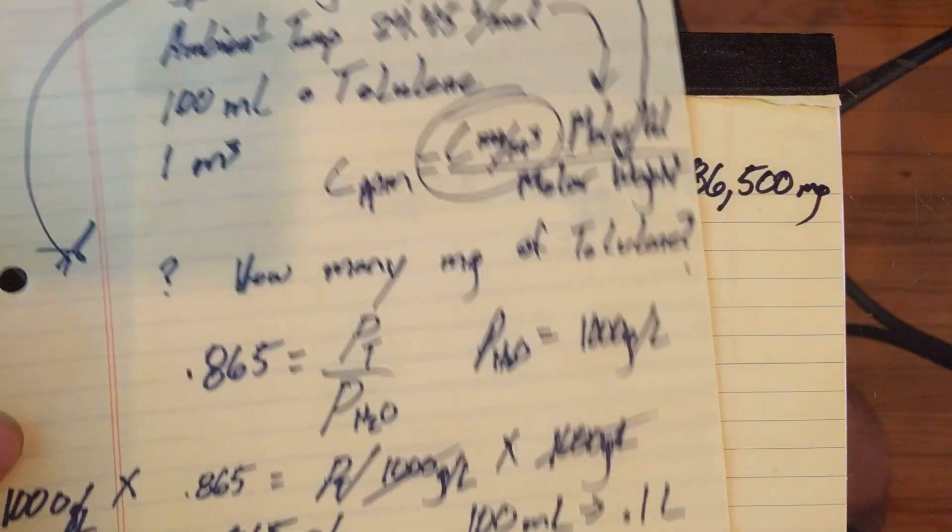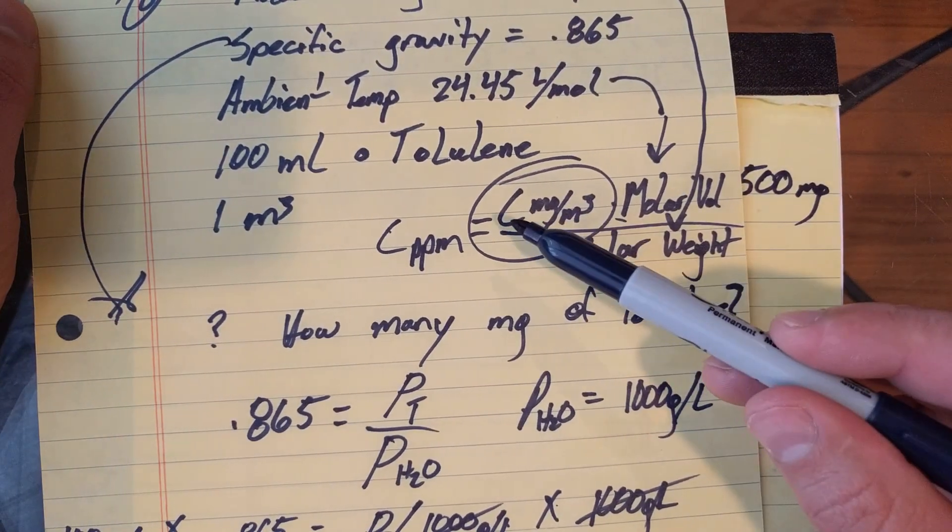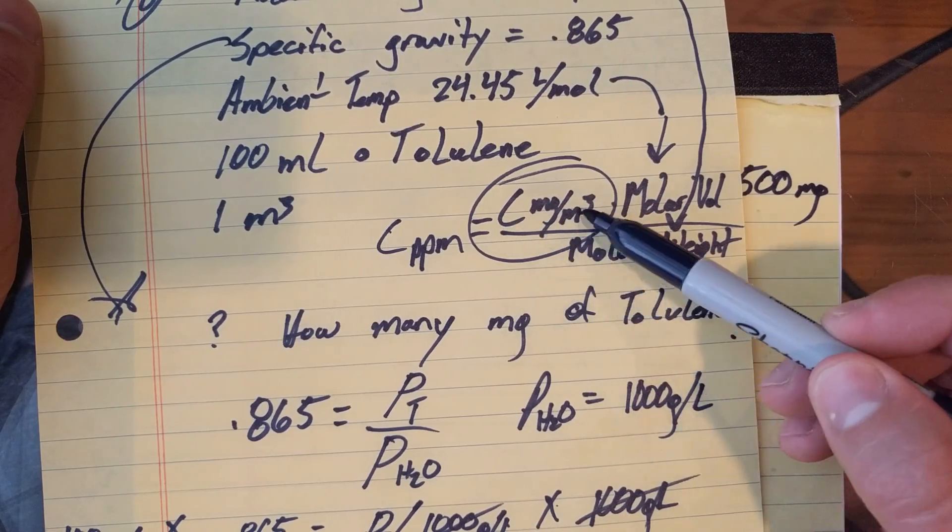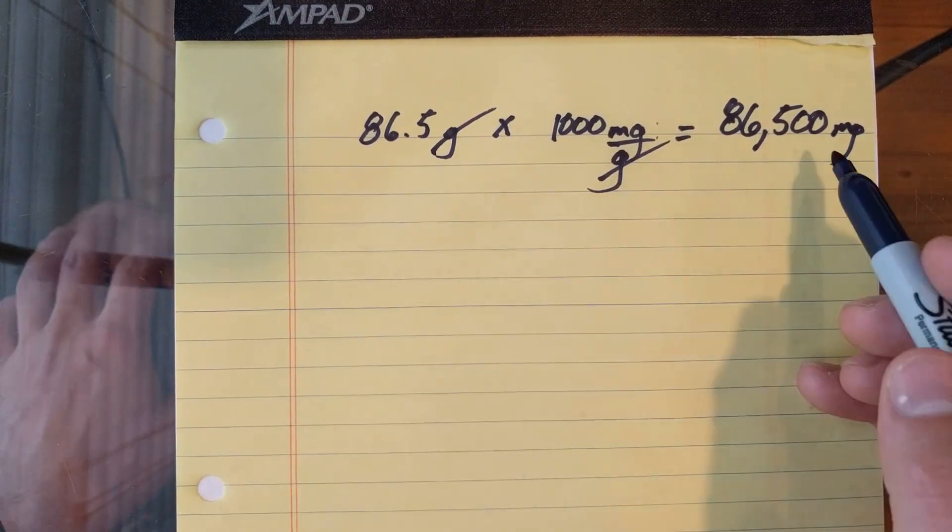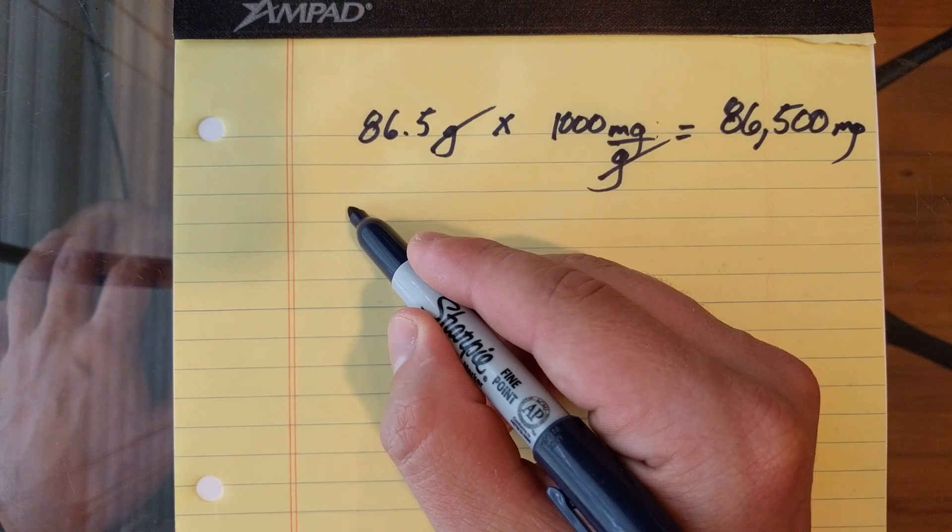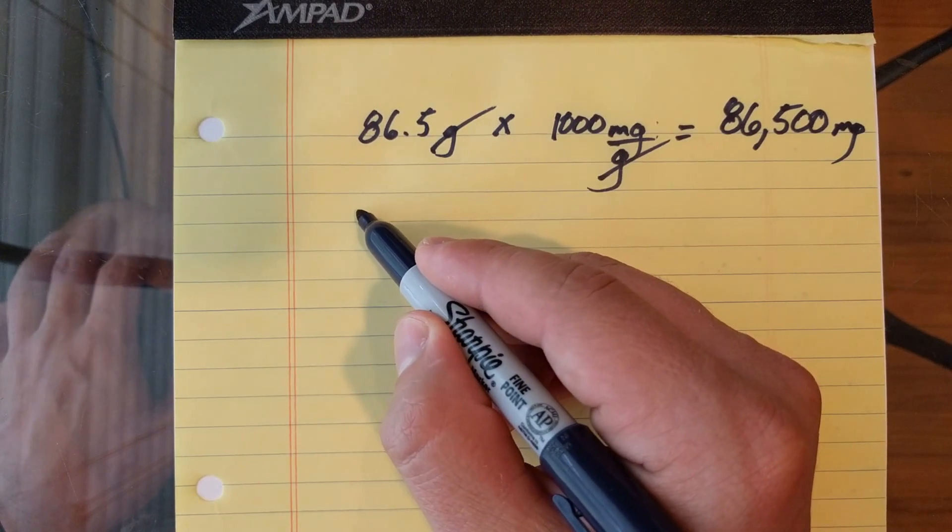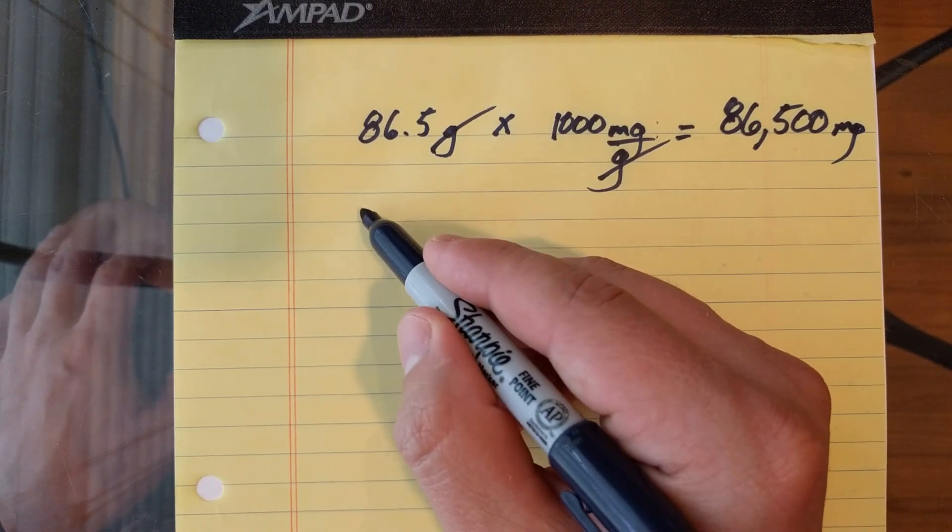Now, let's go back up here and look at this equation. What do we need? We need concentration in milligrams per meter cubed, right? So our volume is going to give us that last little bit.